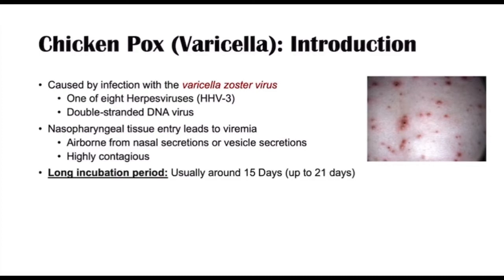When an individual becomes infected, there is a long incubation period. This incubation period can last upwards of 21 days, but it's usually around 15 days. After an individual becomes infected, it takes around 15 days for them to show signs and symptoms. When they do begin to show signs and symptoms, they have eruption of vesicles, which we'll talk more about in the next couple of slides.